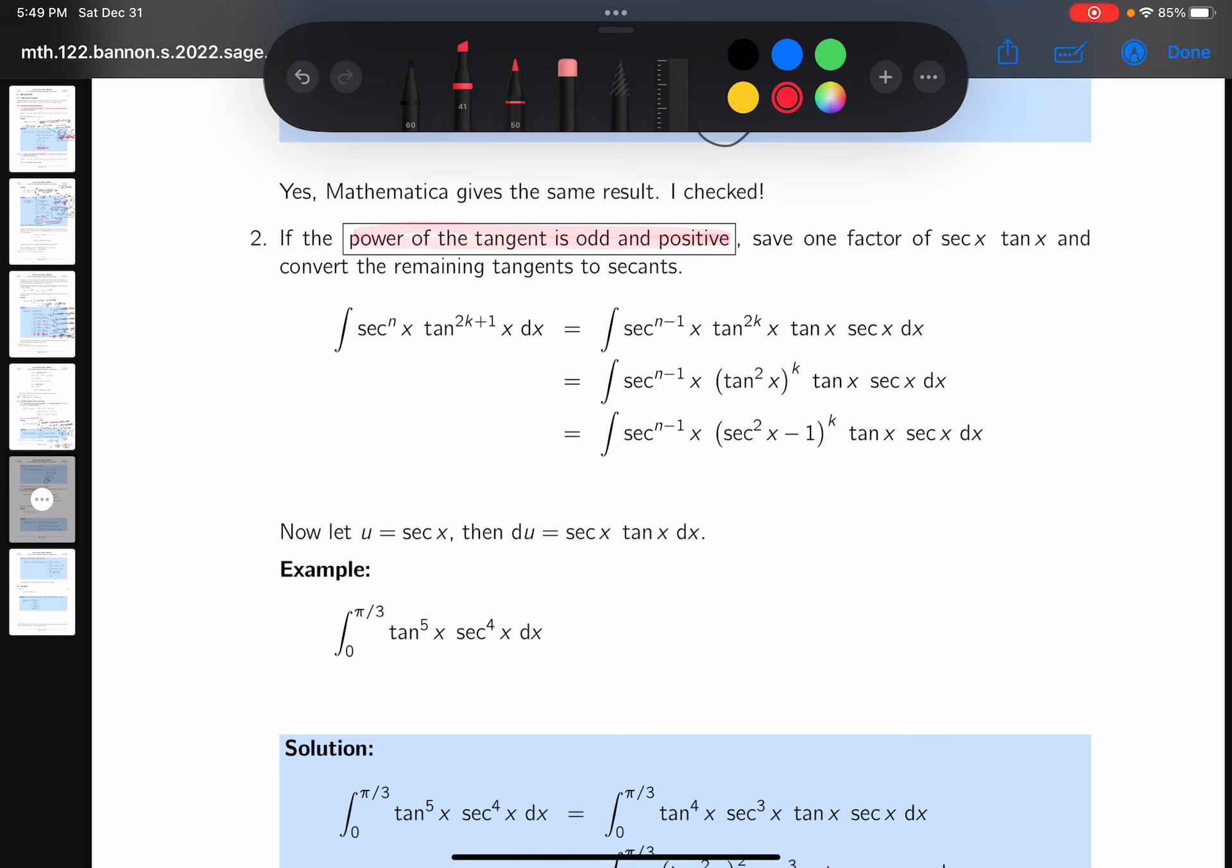Anyway, they say that these are integrals involving tangents and secants, and they say the power of the tangent is positive. What do they tell you to do? They say save one factor of secant tan x in the problem and convert the remaining tangents to secants. I think I can do that, but what I mean by that is I can do what they're asking me to do, which is save something. So they said save a secant tan, I'll do that.